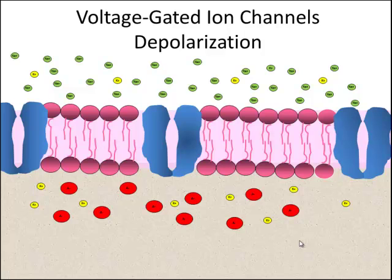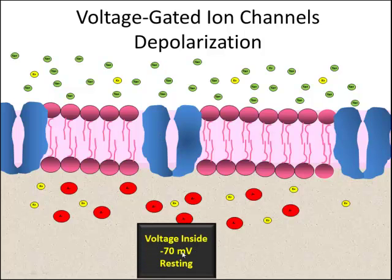This is to demonstrate how an action potential is sent down an axon. This is the axon membrane, and you have voltage-gated ion channels in the membrane. The inside of the cell is a negative 70 millivolts compared to the outside. This is a polarity.